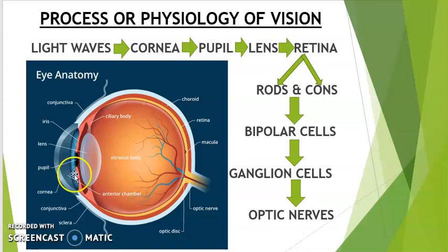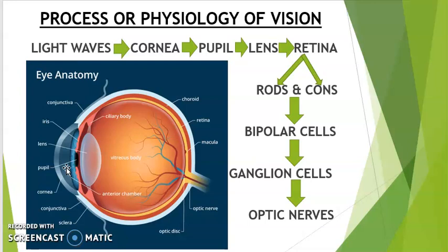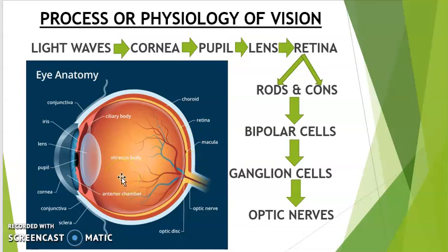There is a space filled with a transparent watery fluid between the cornea and the lens; that fluid is known as aqueous humor. Aqueous humor helps to maintain the pressure in the eye and also nourishes the cornea. At the center of the iris there is a black hole known as the pupil, which allows light to enter into the inner eye. The size of the pupil is adjusted by the iris to regulate the amount of light entering. The pupil constricts in bright light and dilates in dim light.